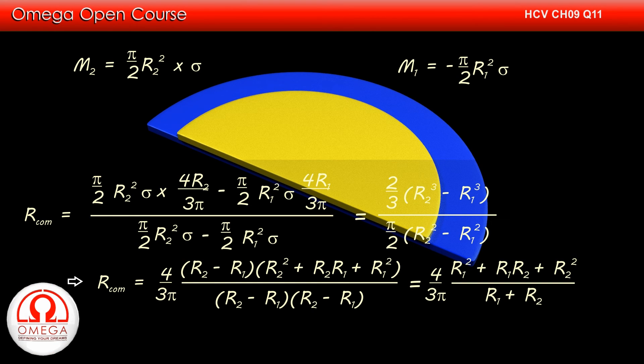Simplifying, we get distance of center of mass from center as 4/3π × (R1² + R1R2 + R2²) / (R1 + R2).